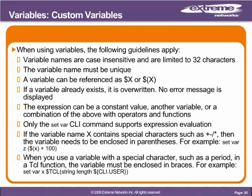Only the set var CLI command supports expression evaluation. If the variable name contains special characters - star, slash, plus - it must be encapsulated in parentheses, which lets EXOS know there are special characters in the variable. When using a variable with a special character, like CLI.user or CLI.out, you must encapsulate them in curly braces in the TCL command function. For example, dollar sign TCL string length, then evaluation of CLI user, called as dollar sign curly brace CLI.user curly brace.